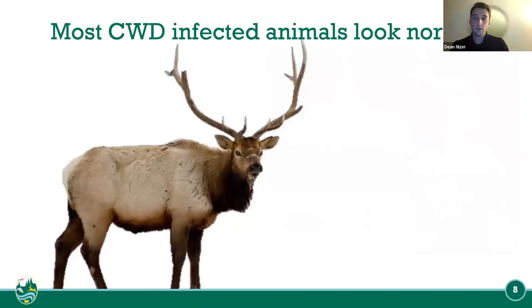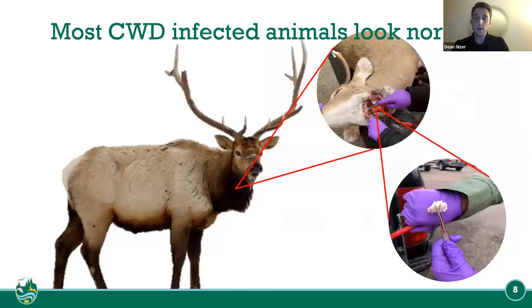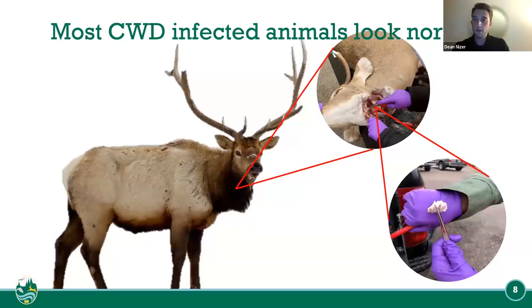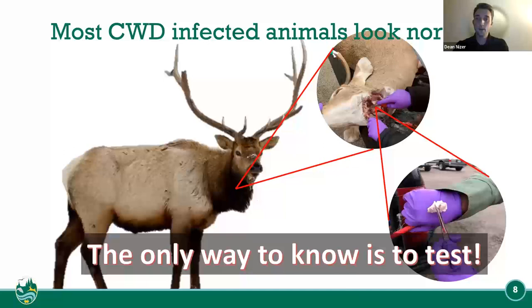Most CWD-infected animals look normal, just like this elk here. It's not until the end stage of its life where it starts showing clinical signs of wasting away. For testing, we take two lymph nodes out of the neck of the deer, elk, or any cervid, and send those to the WSU diagnostic laboratory over in Waddell. The only way to know if an animal has CWD is to test.